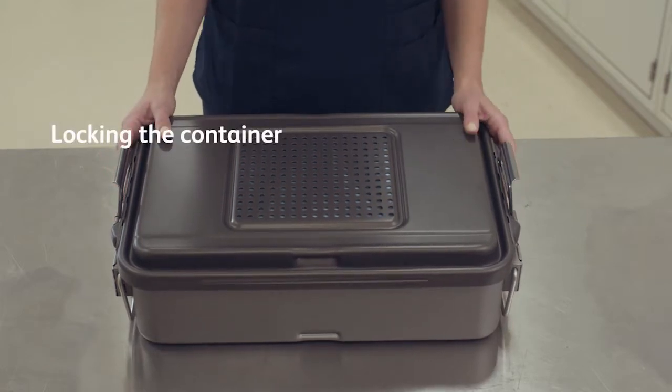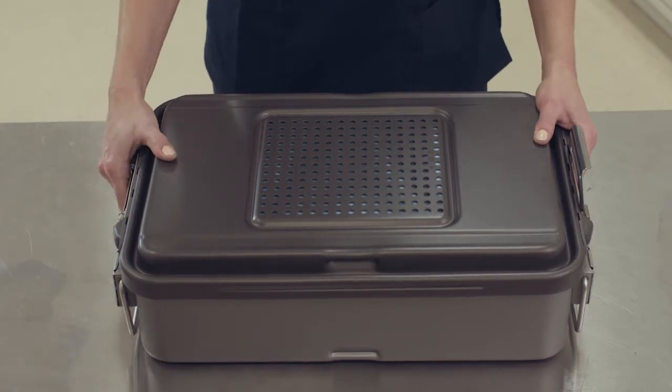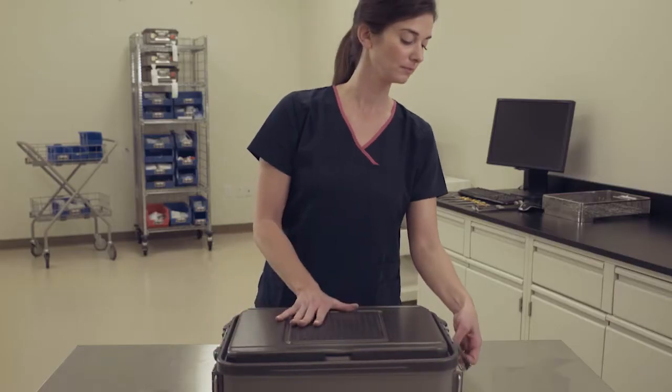To lock the container, begin by interlocking the lid latch with the bottom latch on both sides. Press down with smooth continuous pressure until an audible snap is heard, confirming the latch is secured.